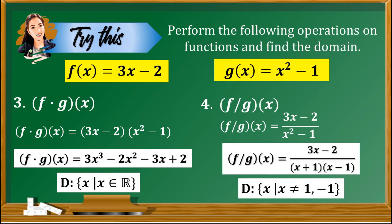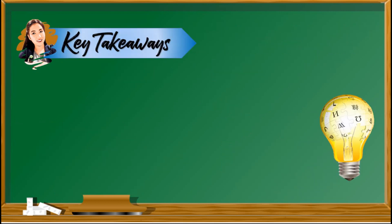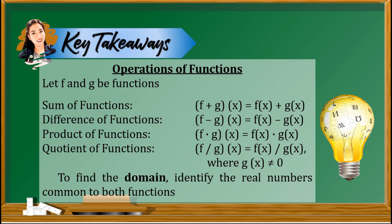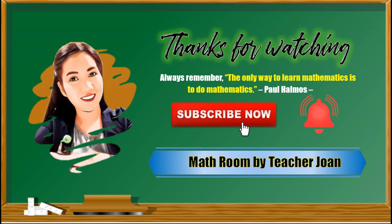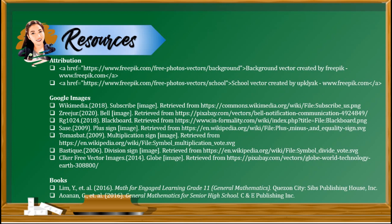Were you able to answer all of these? If yes, great job. If not, you may go back to our discussion. Here are the things to take note in this lesson: the four fundamental operations of functions — sum, difference, product, and quotient. To find the domain, identify the real numbers common to both functions. For the quotient, exclude the values that make the denominator 0. This is the end of our discussion on operations of functions. Thanks for watching, and I hope you learned a lot. Please click the subscribe button and turn on the notification bell to be updated. Bye everyone, see you in our next video.